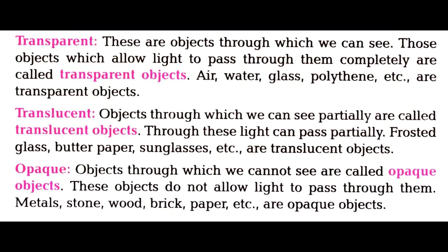Transparency: transparent objects are those through which we can see. Objects which allow light to pass through them completely are called transparent, like air, water, glass, and polythene. Translucent objects allow light to pass only partially — like frosted glass, butter paper, and sunglasses. Opaque objects are those through which we cannot see at all; they do not allow light to pass through them — like metal, stone, wood, and brick.